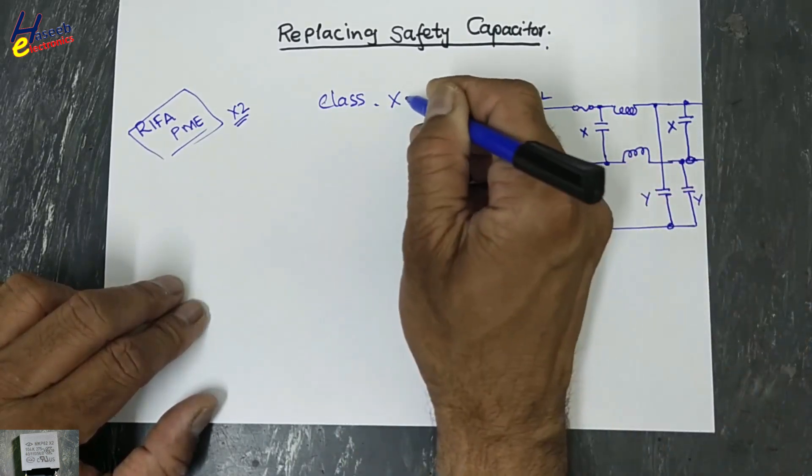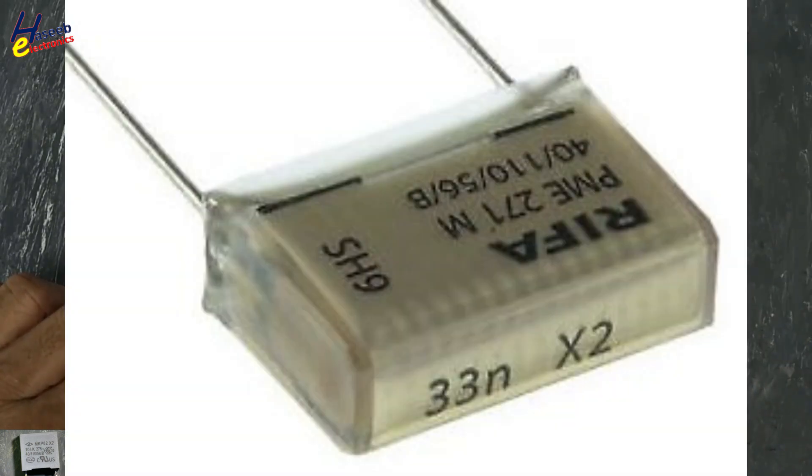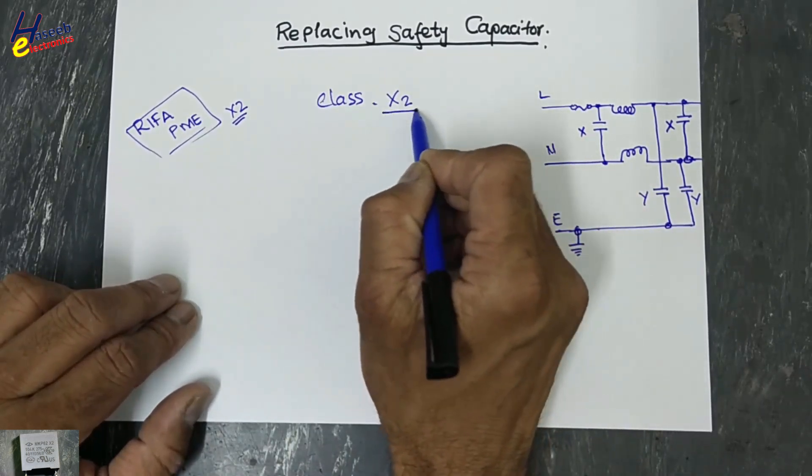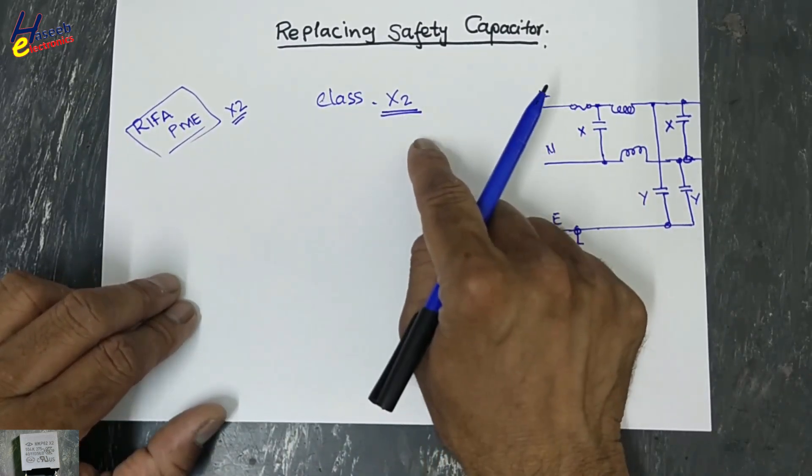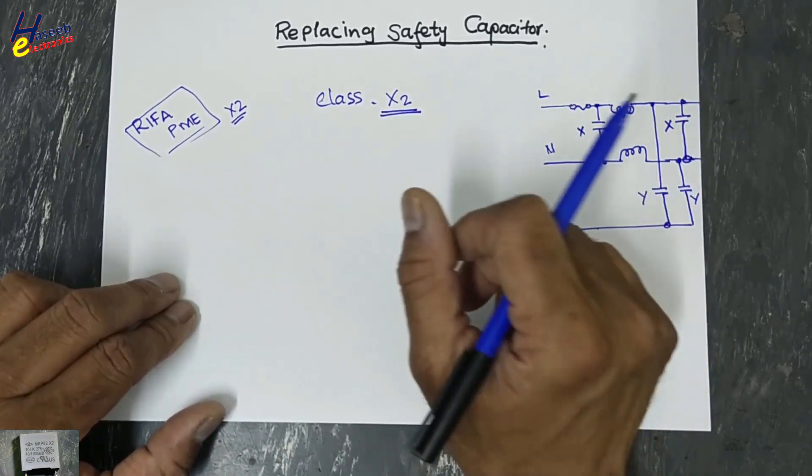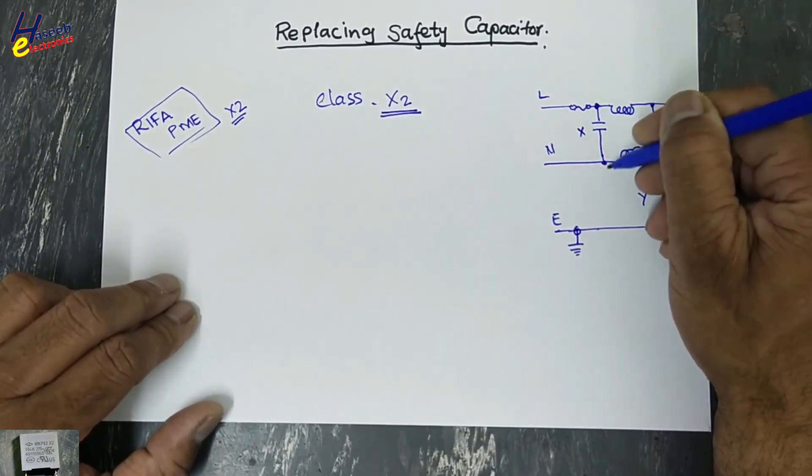Most of the time X2 capacitor is used. RIFA PME is an X2 capacitor, so we will select in the same class. That is normally 275 volt to 310 volt range because it is connected between line and neutral.